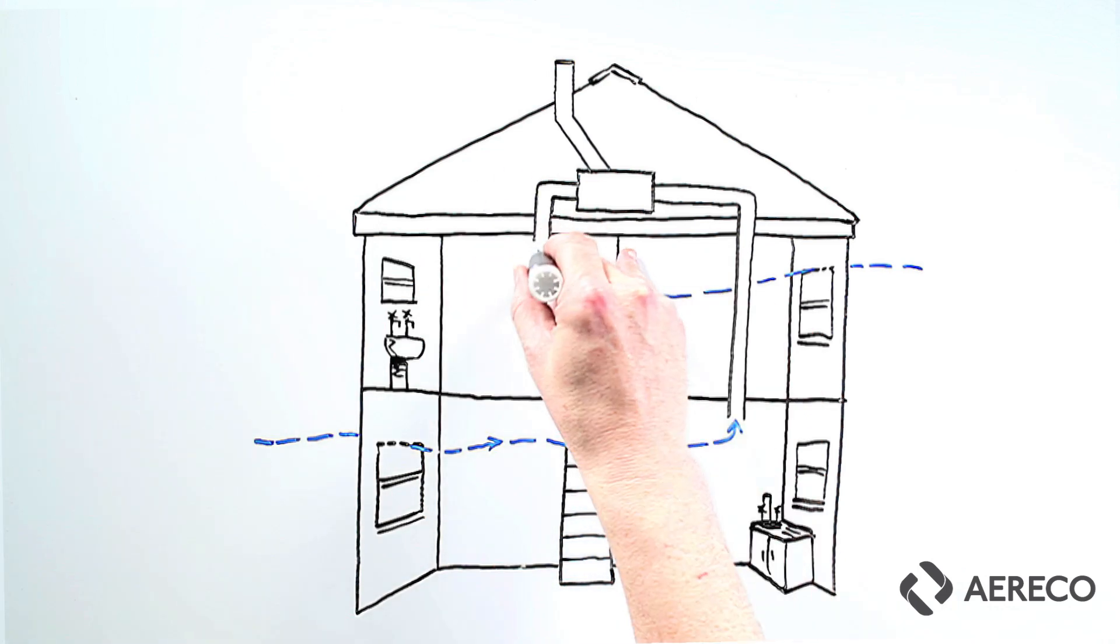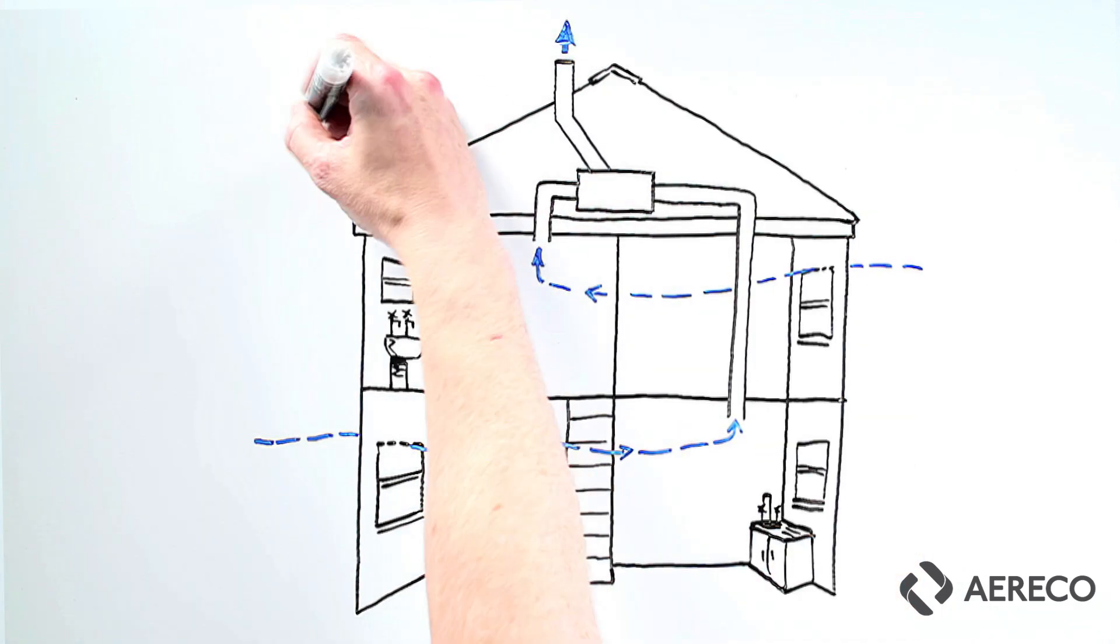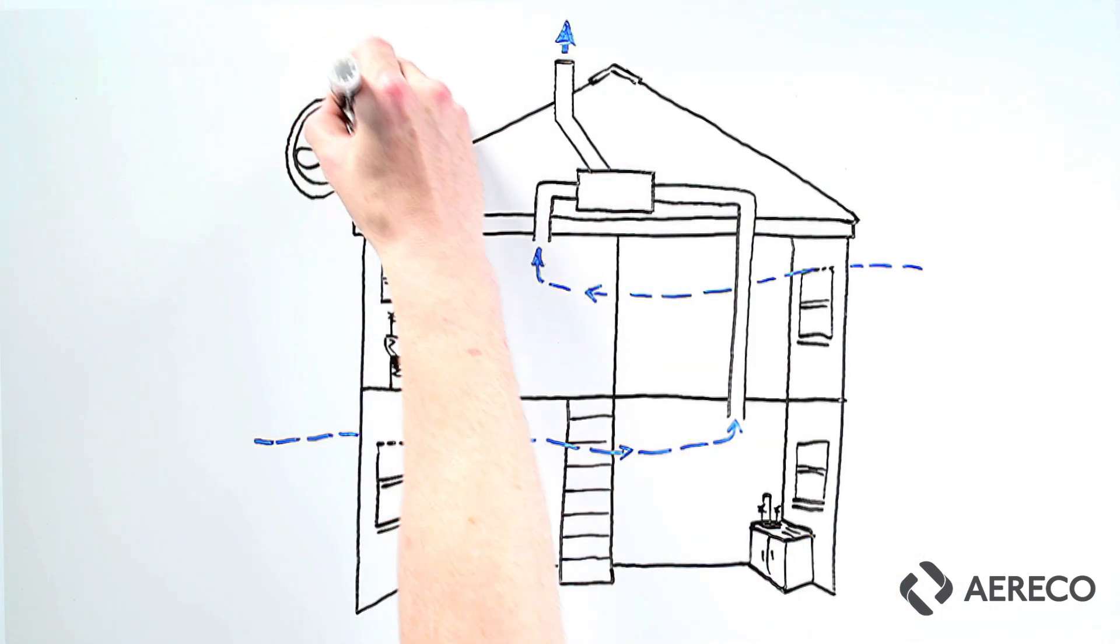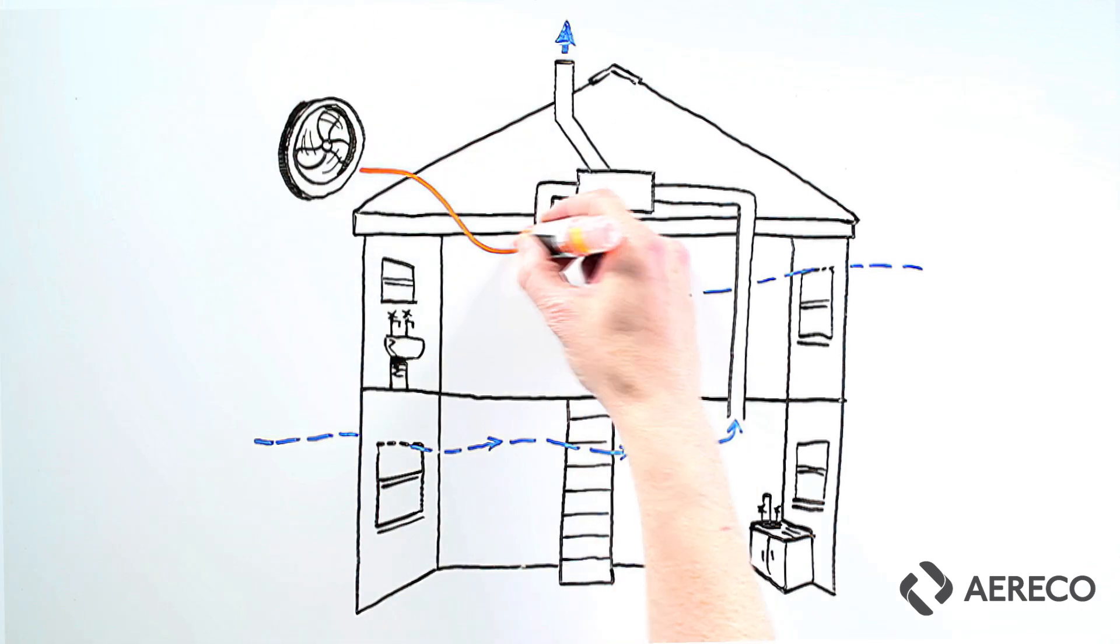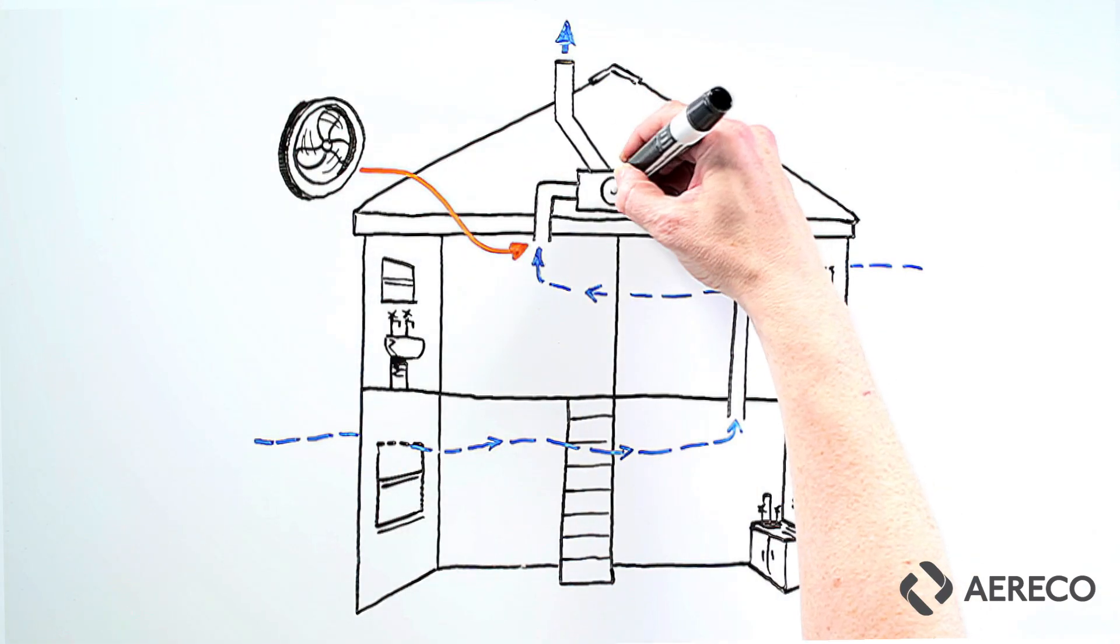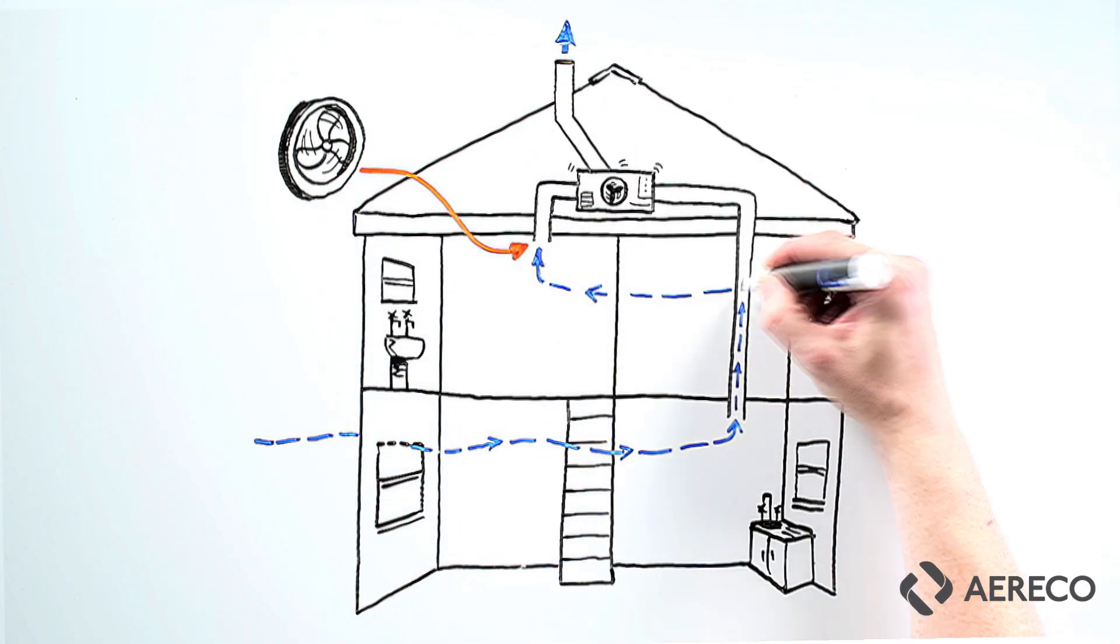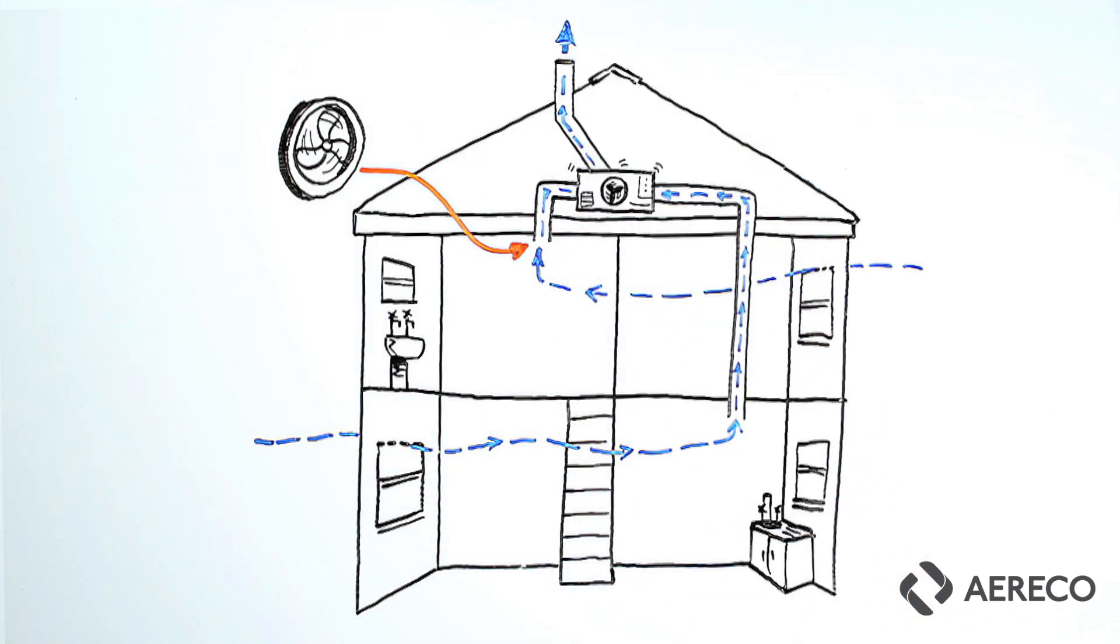Similar to passive stack, except this time we extract with fans. This can be done separately in each wet room—this is called decentralized MEV—or through a central fan—this is called centralized MEV. These are quiet and energy-efficient fans.